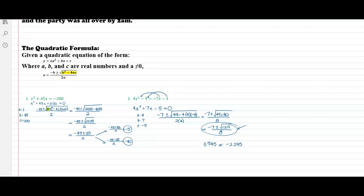In our first example, it was 45 squared minus 4 times 1 times 200. In our second example, it was 49 minus 4 times 4 times negative 5.